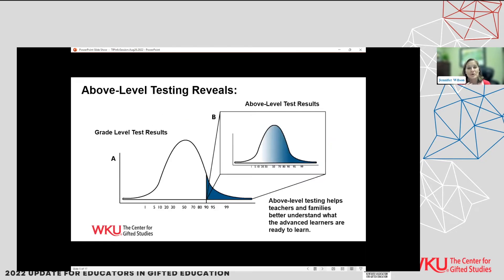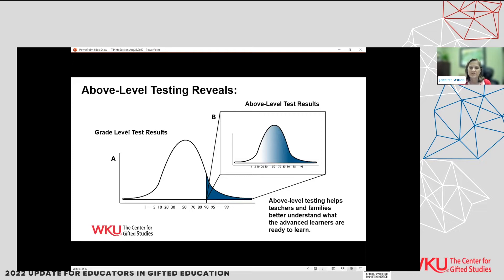Basically, how the above-level testing works is: when your students have the grade-level test, students that are hitting the 95th or 99th percentile regularly — you're not fully equipped with regular grade-level assessments in terms of what their full capability is. The test we're using is the IXL, out of the Belin-Blank Center. It's designed for eighth-grade junior high students and administered to students in fourth through sixth grade. We're trying to break that ceiling effect they were talking about in the video.